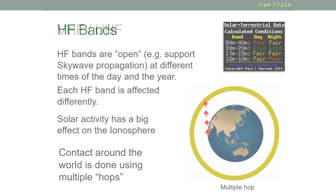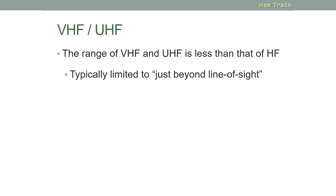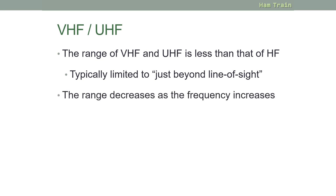Let's look now at VHF and UHF and how that differs from HF propagation. The range of VHF and UHF is less than that of HF — typically just beyond line of sight. A handy example is to think about satellites and the International Space Station: they are a considerable distance away, but because there's nothing in the way such as the curvature of the earth, you are able to receive and send radio signals to them. The range of VHF and UHF decreases as the radio frequency increases.